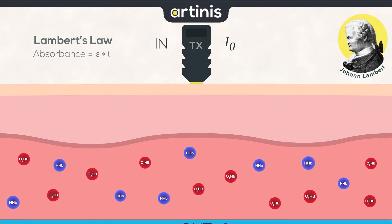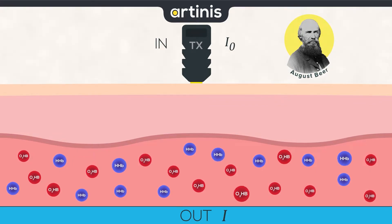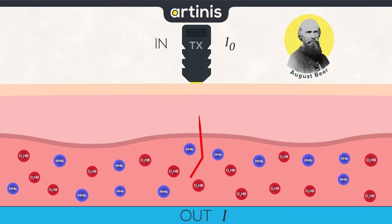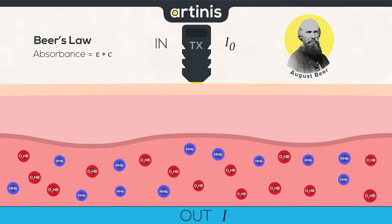A century later, in 1852, Beer, a German physicist, stated that absorbance also depends on concentration. As we can see in this picture, there is a higher concentration of chromophores. Therefore, more of the light will be absorbed, which will make the absorbance level rise. Written as a formula, it gives absorbance equals molecular extinction coefficient times concentration.